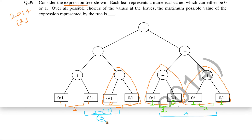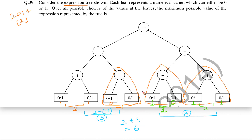So 3 is the maximum possible value of the left subtree and 3 is the maximum possible value of the right subtree. Overall, there is a plus operator at the root. So the maximum possible value of the entire expression tree is 3 plus 3, which is 6. Our final answer is 6.